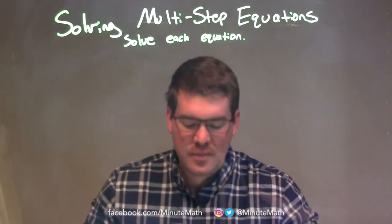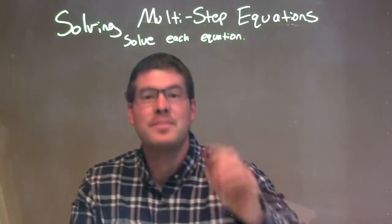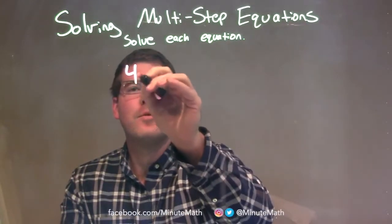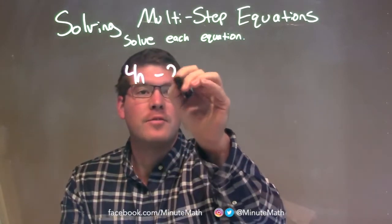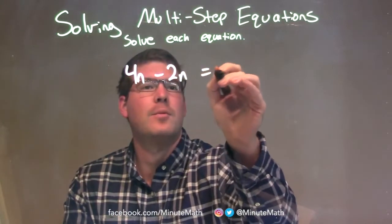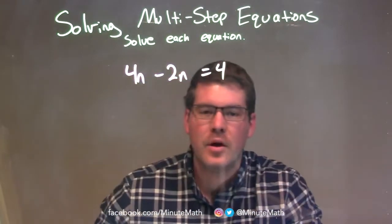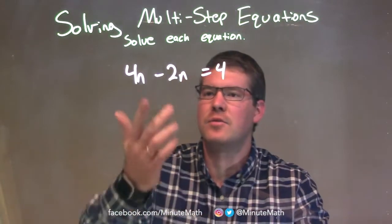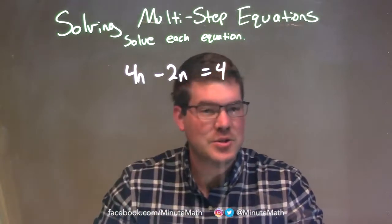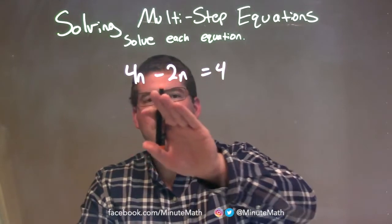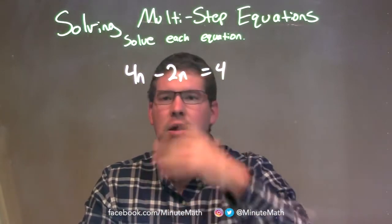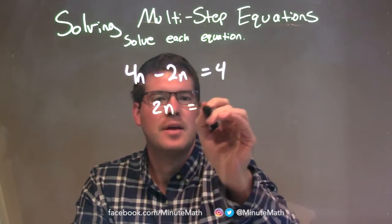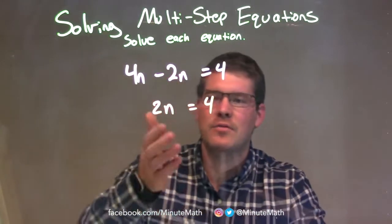We're going to solve each equation. If I was given this equation 4n minus 2n equals 4, my first step is I want to combine my like terms on the same side. The two terms I see here are 4n and 2n. So I'm subtracting 4n minus 2n and that just becomes 2n. Bring down the 4, so now we have 2n equals 4.